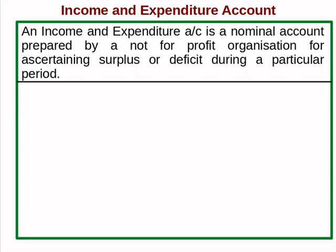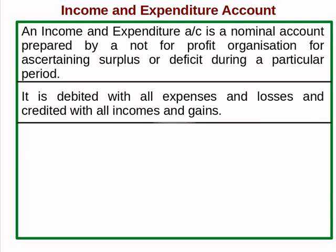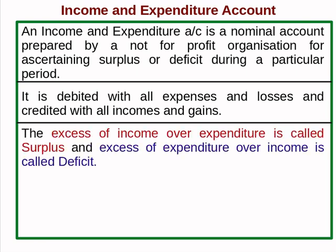The result of an income and expenditure account is called either surplus or deficit. If income is more than expenditure, it is called surplus — the excess of income over expenditure is called surplus. Similarly, the excess of expenditure over income is called deficit.